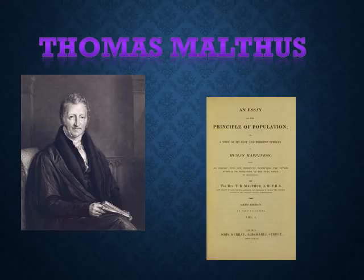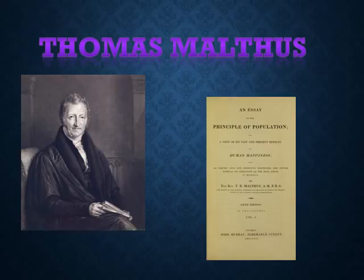Darwin realized that Malthus' reasoning applied even more to other organisms than it did to humans. A maple tree can produce thousands of seeds each summer. One oyster can produce millions of eggs each year. If all the descendants of almost any species survived for several generations, they would overrun the world. Obviously, this doesn't happen. Most offspring die before reaching maturity, and only a few of those that survive manage to reproduce.